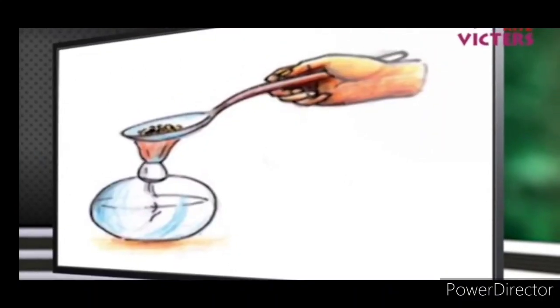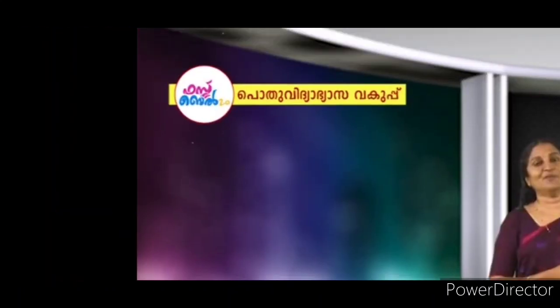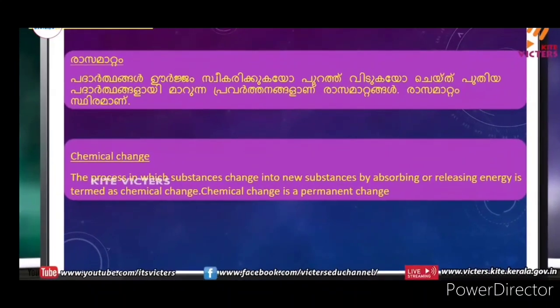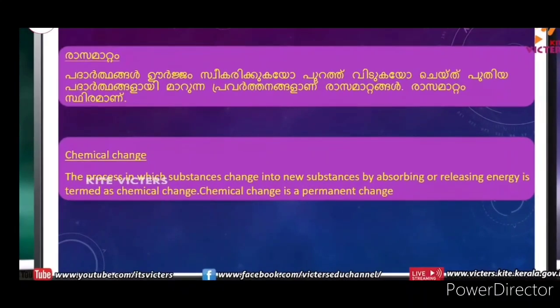If we add sugar in a teaspoon, it is a black color. If we add chemical changes — the process in which substances change into new substances by absorbing or releasing energy — it is termed as chemical change. Chemical change is a permanent change.